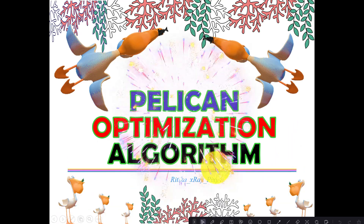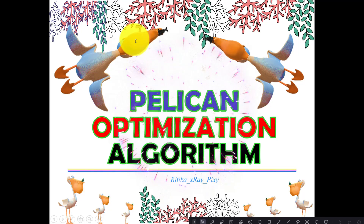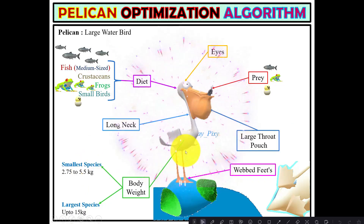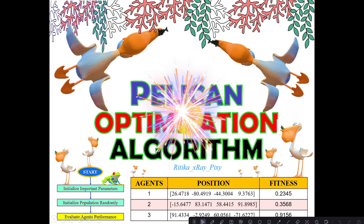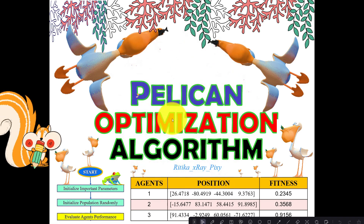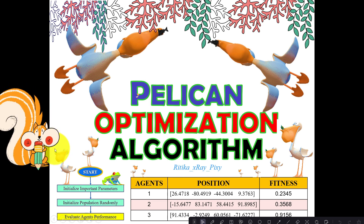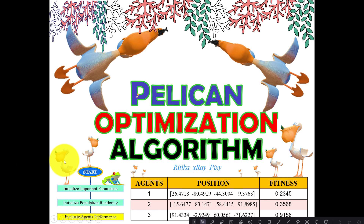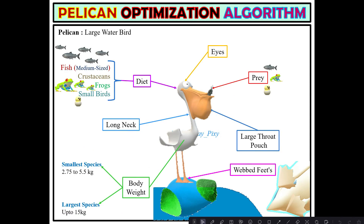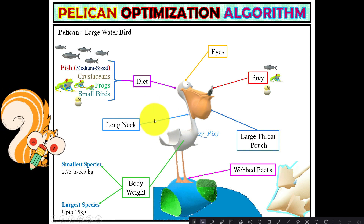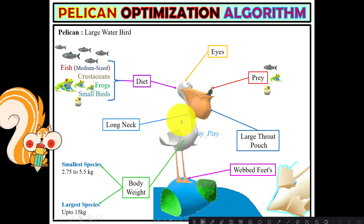This video is based on the Pelican Optimization Algorithm. In this video we will try to understand what this algorithm is all about, how it works using a numerical example and algorithm flowchart. The algorithm is basically inspired by the pelicans' natural behavior during hunting, where pelicans are considered as the search agents searching for food sources.